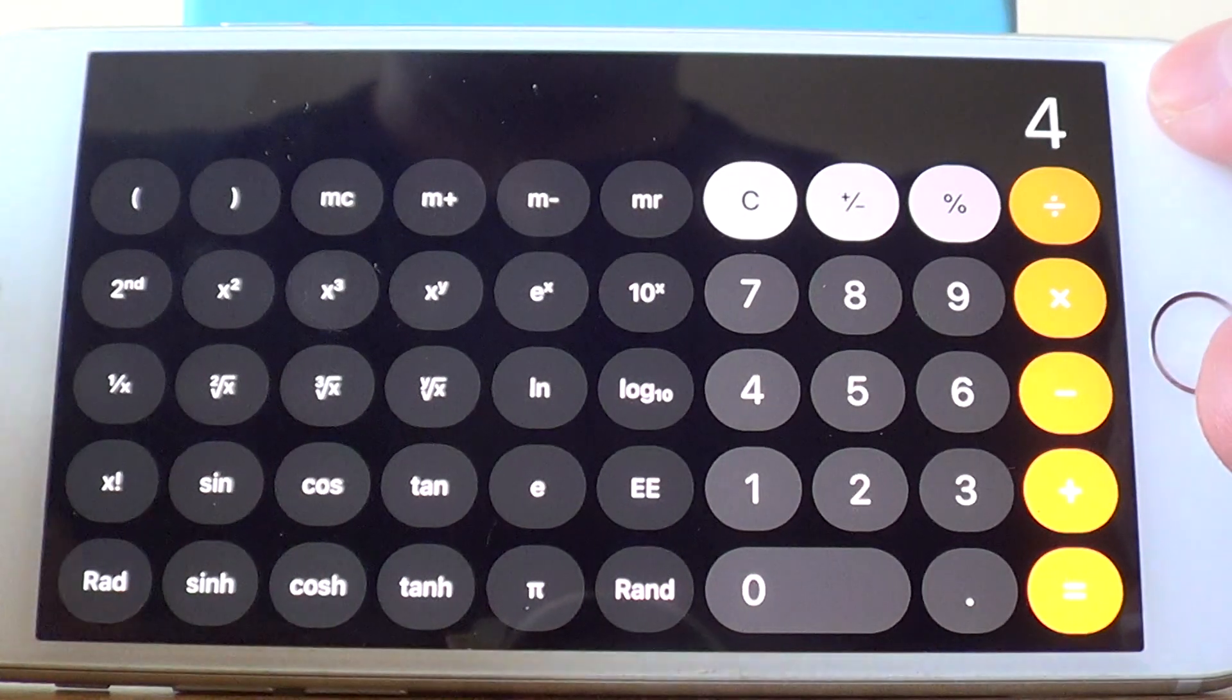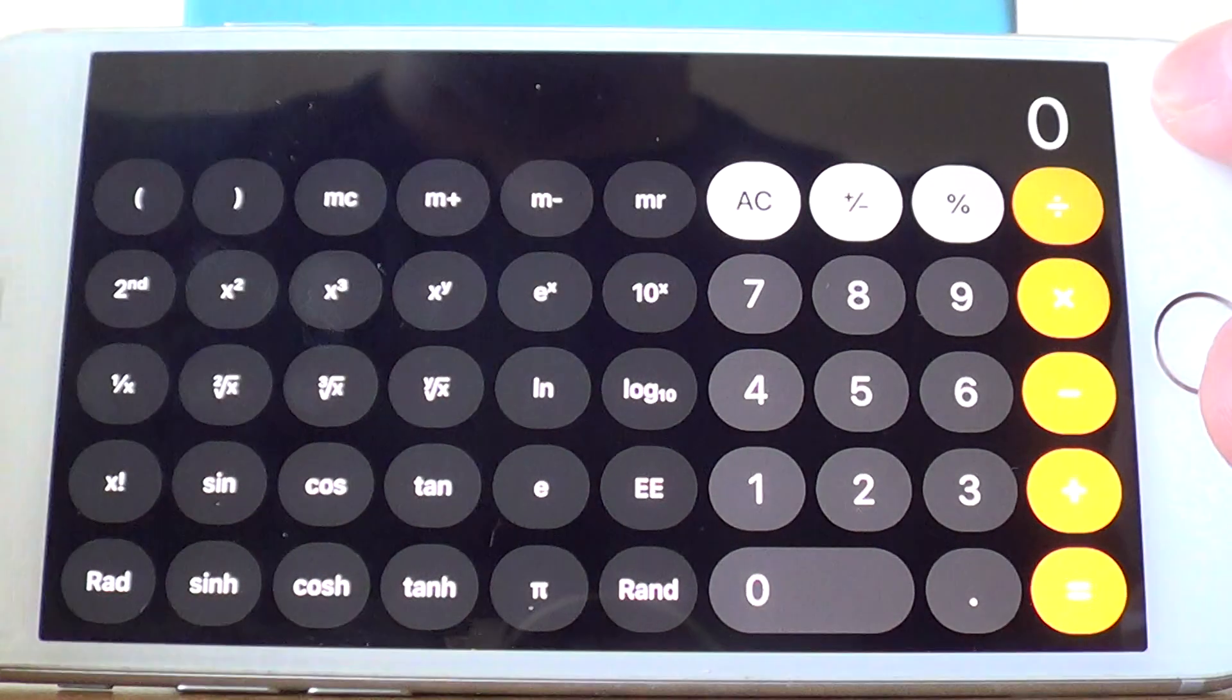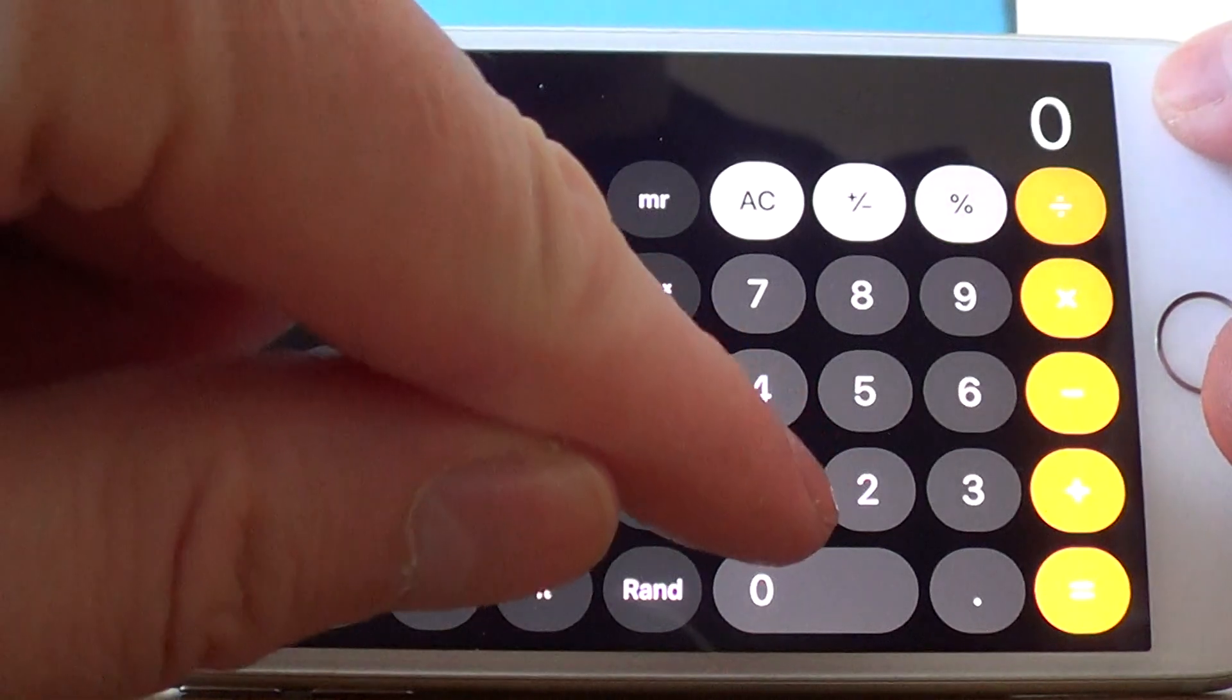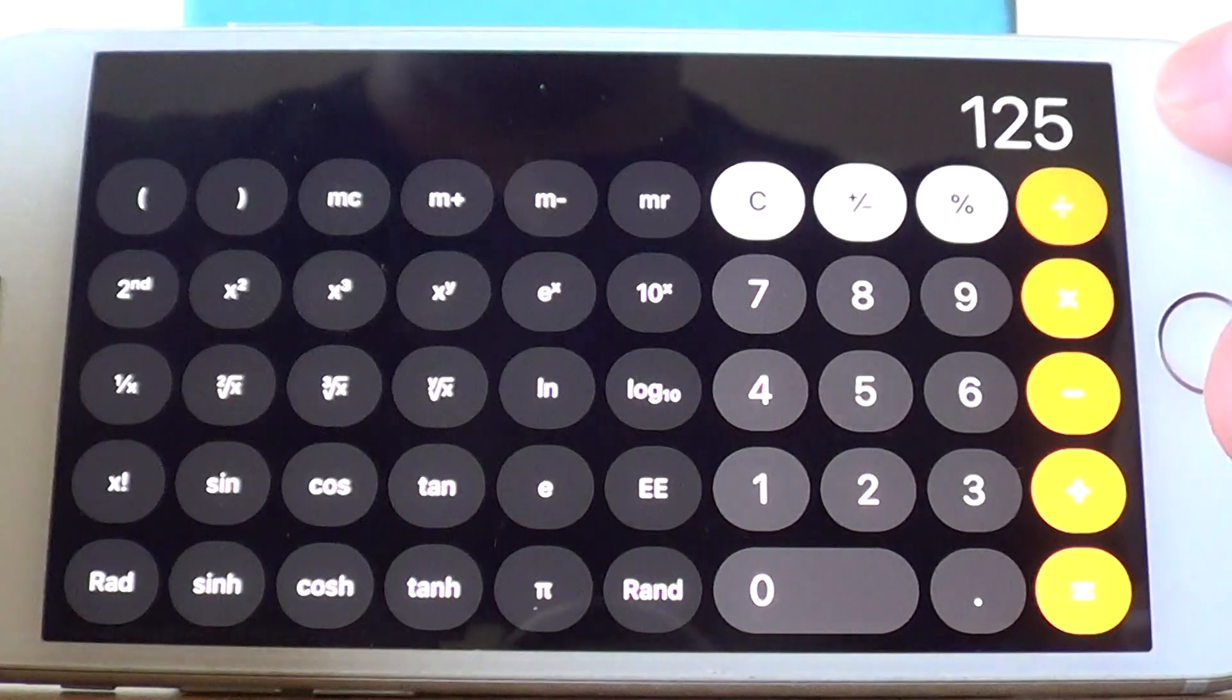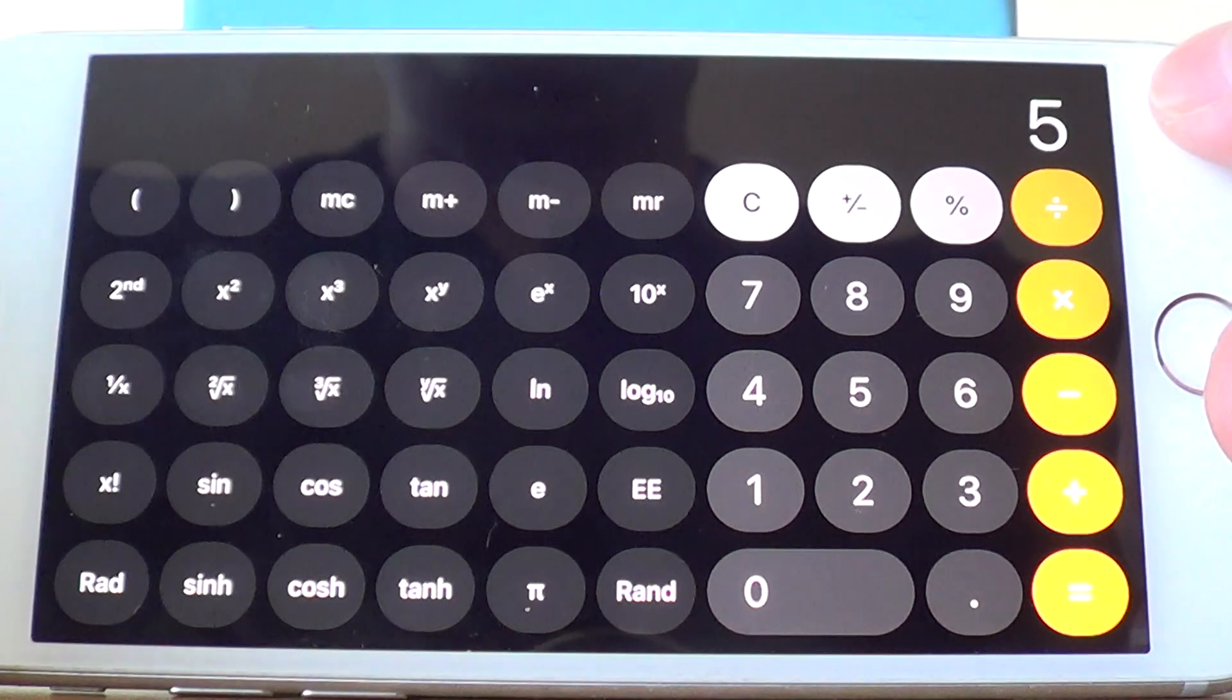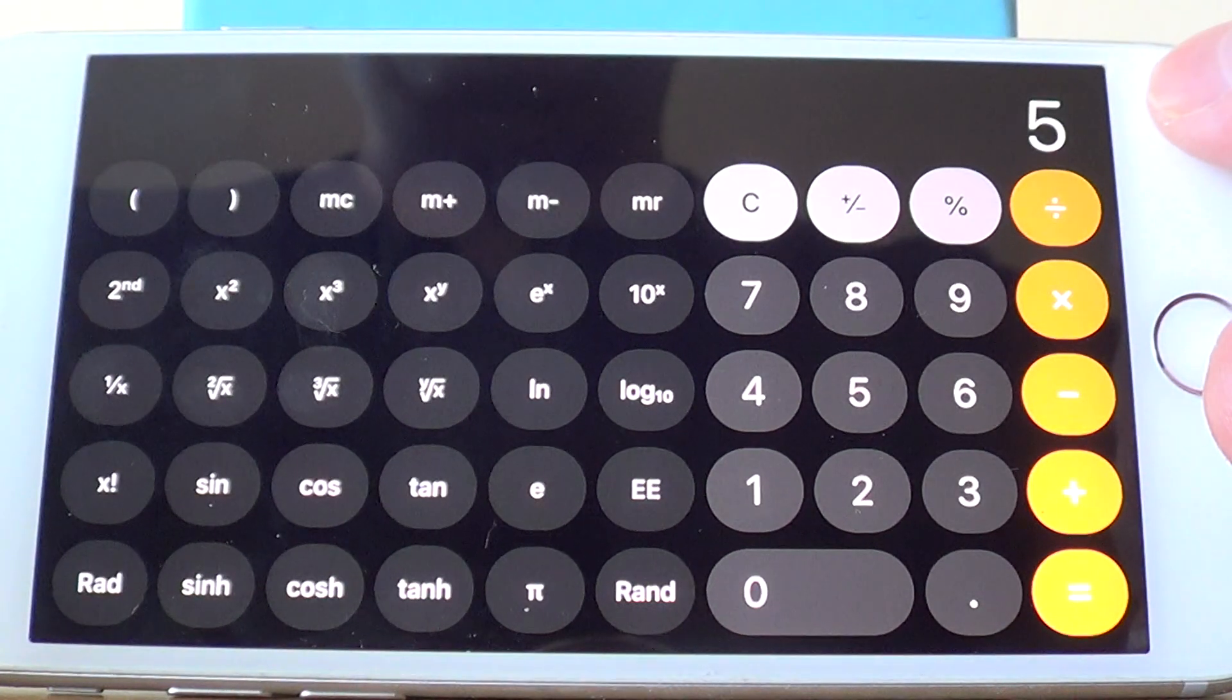So let's do one more example. Let's delete this one off. So let's work out the cube root of 125. If we type in 125, then hit the cube root key, which is this one here, and we get the answer 5.